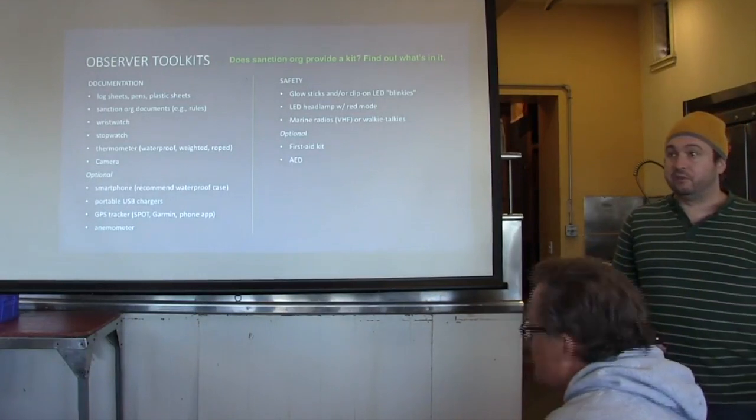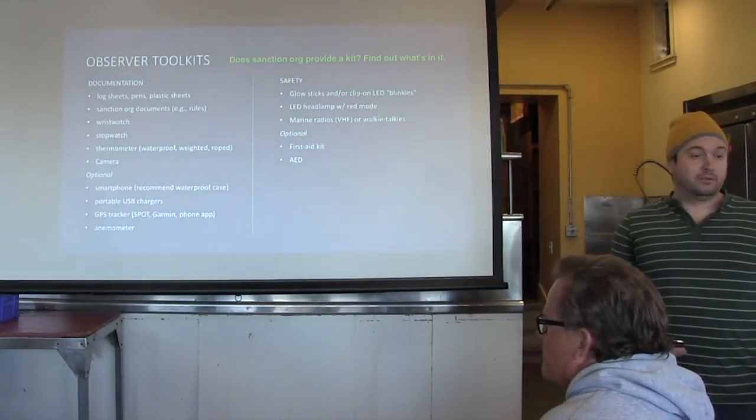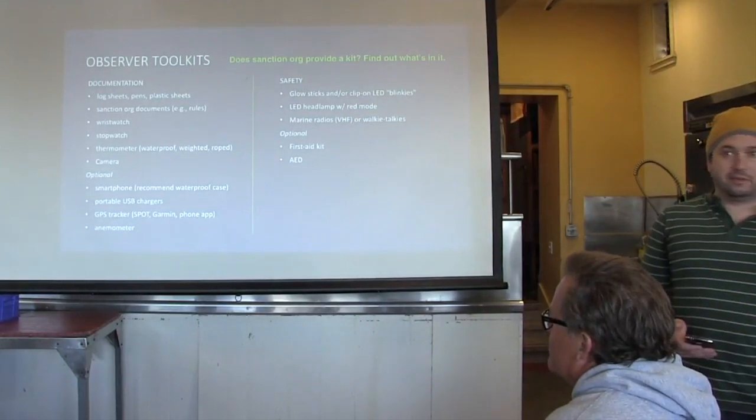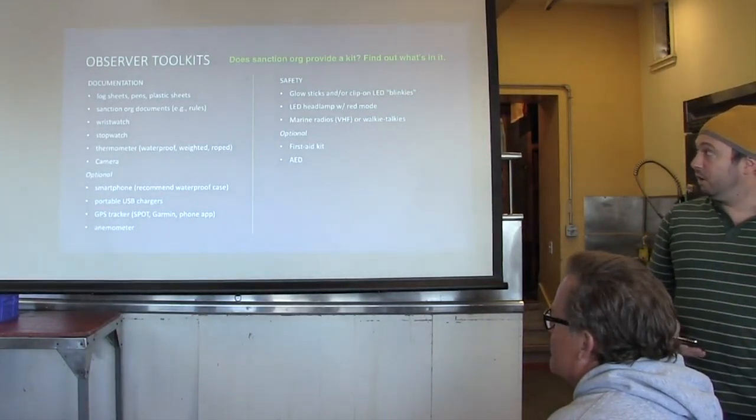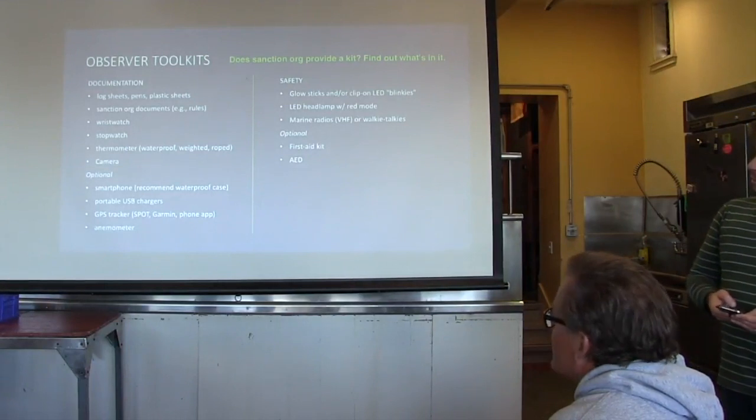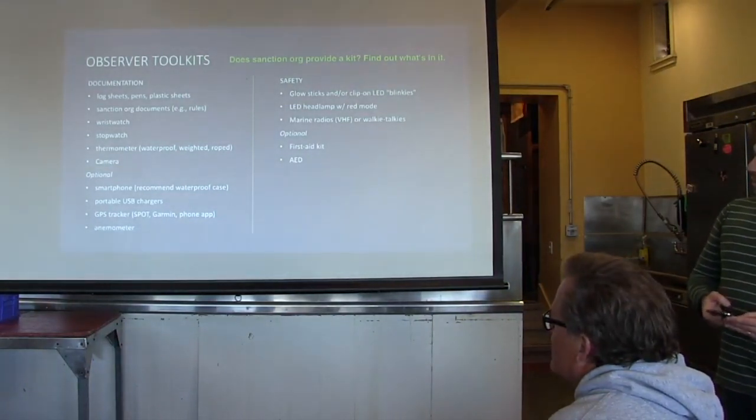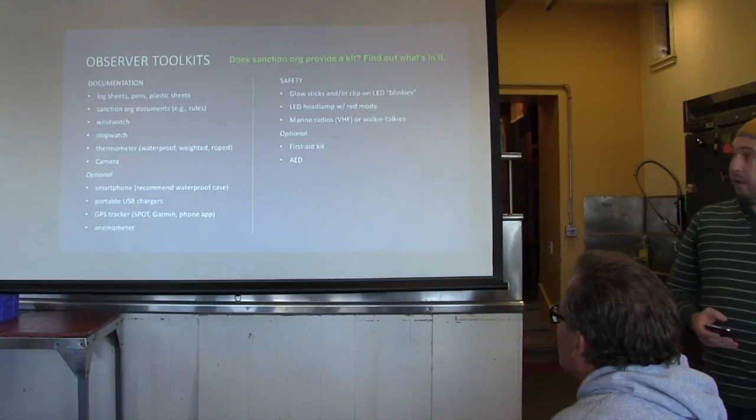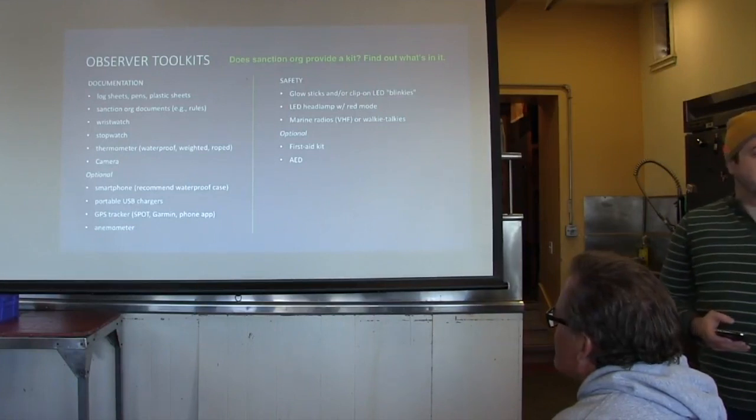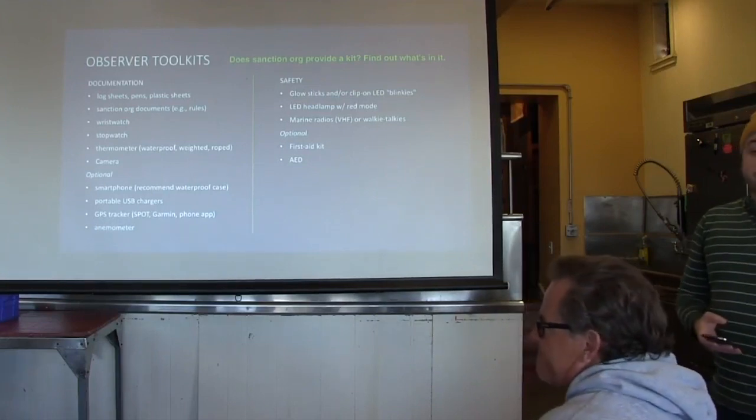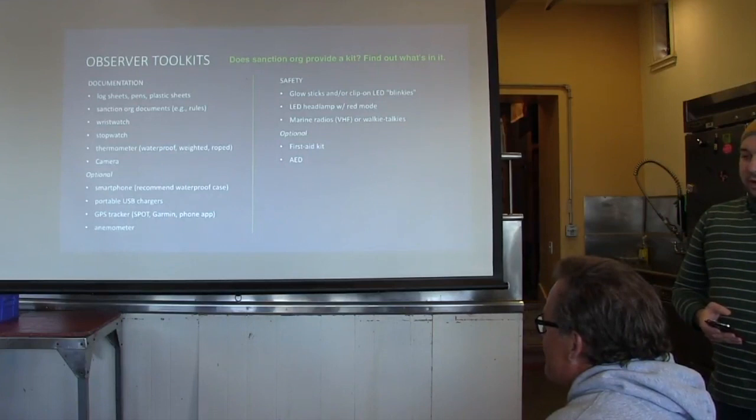First, find out if the sanctioning organization provides a kit. Find out what's in it so you can cross off a few things you may need to bring yourself. Although it's always good to have extras of certain things like pens, maybe an extra watch. Divided the items into categories here. Think about what you need to document the swim properly. Log sheets, which should be provided by the sanctioning organization. If they're not, on the MSF site we have generic log forms that can be used for any swim. The log is basically the central place where you'll take down documentation.